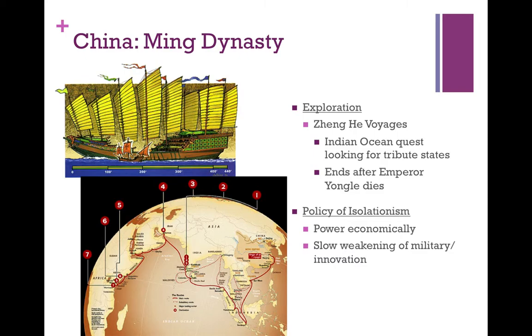They do this by sending out a huge navy — huge both in the number of ships and the size of those ships. If you look to the left, you can see a treasure ship. This is the flagship, the main ship that Admiral Zheng He would have been on.